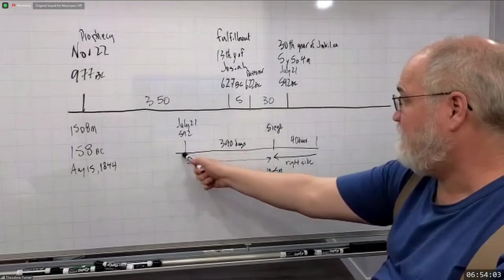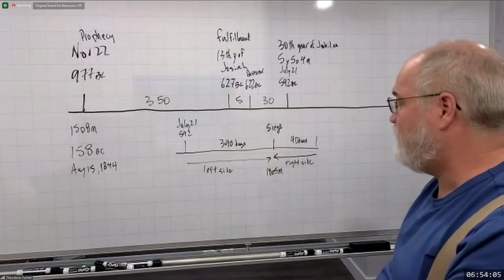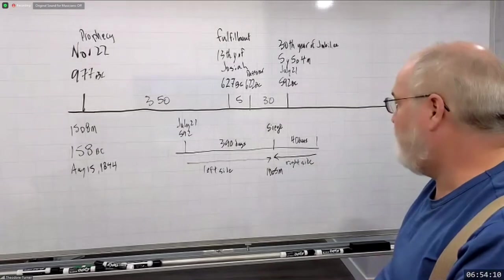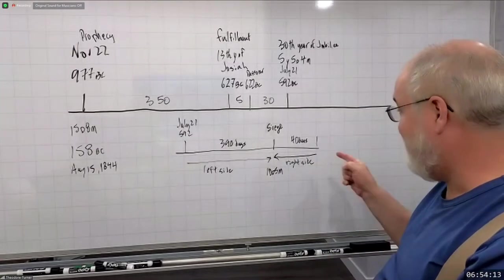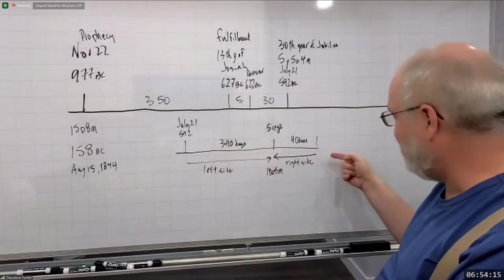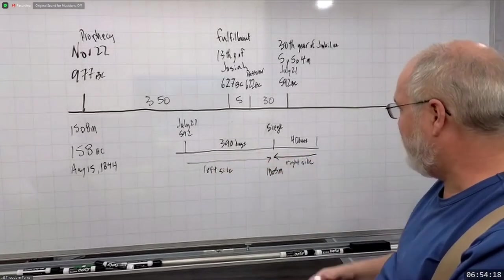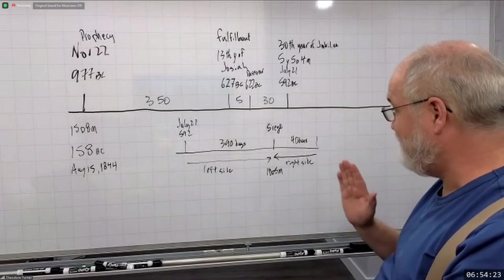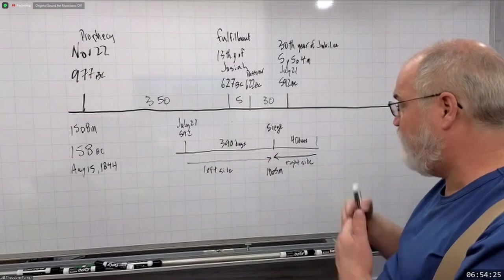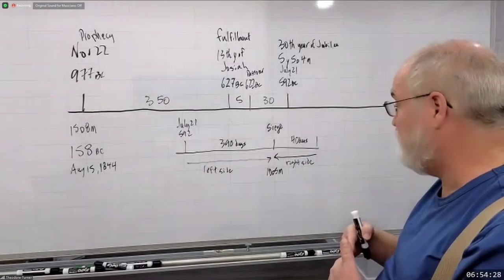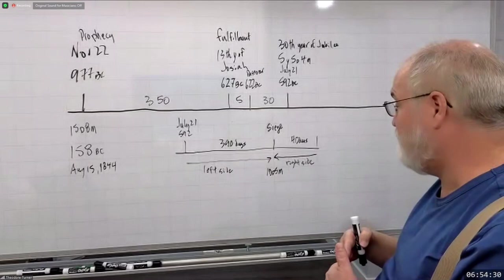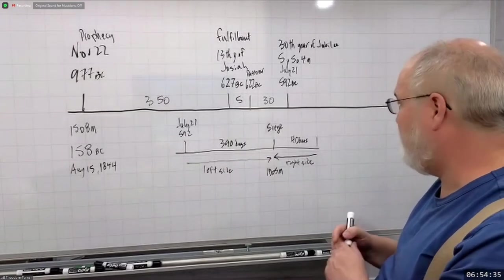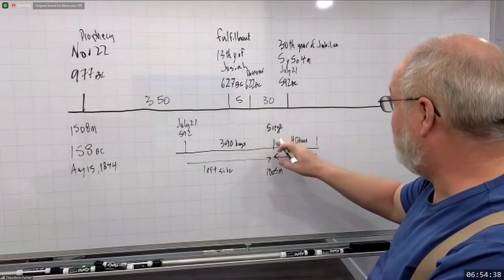Now, what some people do is they say this is 430 days, and it must represent a 430-day period. But we know that because he's on his left side and then on his right side, both facing the siege, it shows that they point towards a certain point — marking what ends up happening, which is going to be the siege.